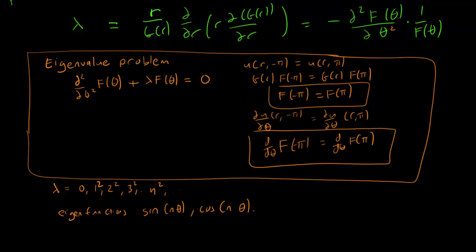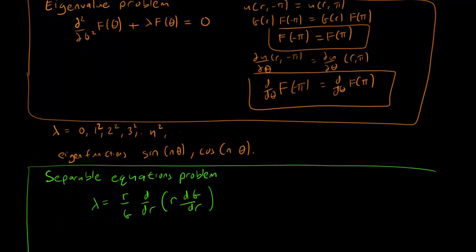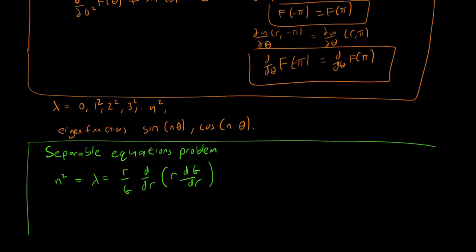So let's also look at the separable equations problem. This is what it looks like, lambda equals r over g, derivative of r, derivative of g. We can set this lambda as n squared, since all our eigenvalues are of the form n squared. And if we simplify, we get this equation over here.